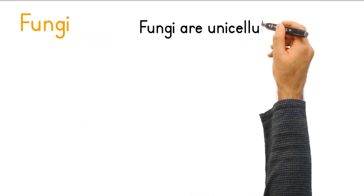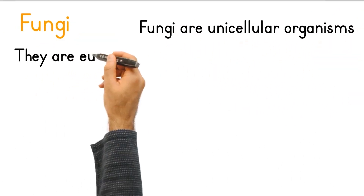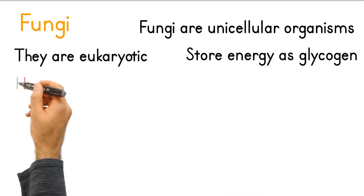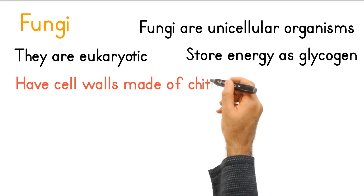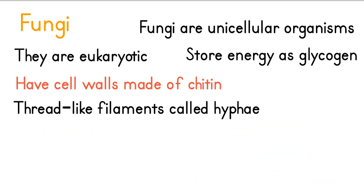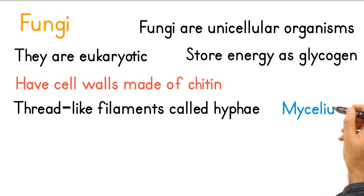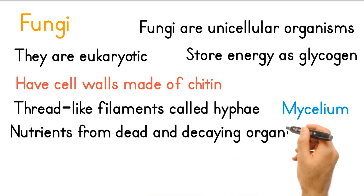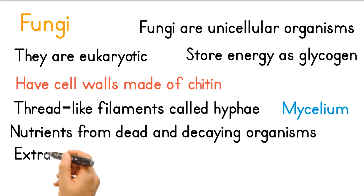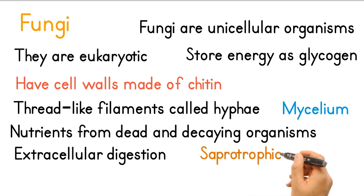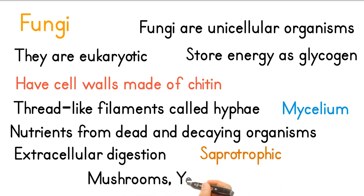Fungi are eukaryotic organisms that store energy as glycogen and have cell walls made of chitin. They have a network of thread-like filaments called hyphae, and together this network is called a mycelium. They absorb nutrients from dead and decaying organisms using extracellular digestion, making fungi saprotrophic. Examples include mushrooms, yeast, and molds.